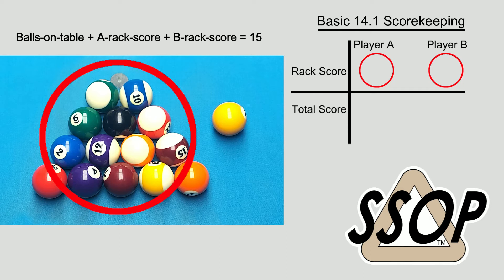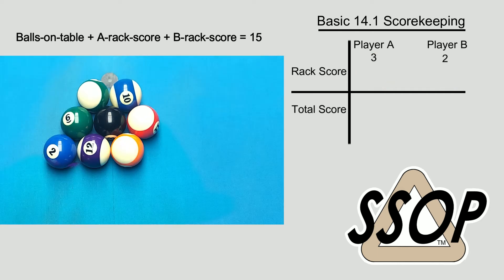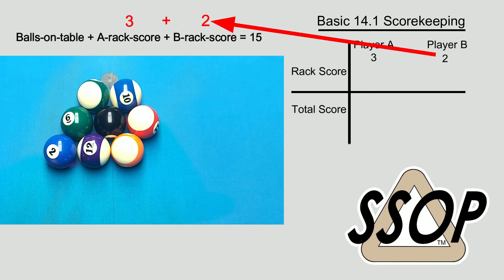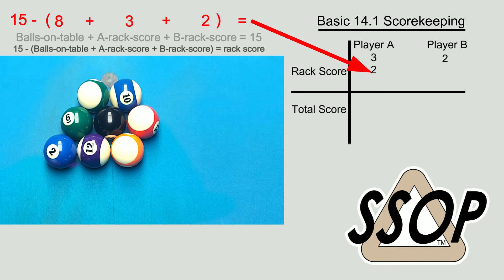The player who is shooting does not need to keep count as they pocket balls. Instead, when your inning is over, you simply add the pocketed balls so far to the balls on the table and subtract from 15. The result will be your score for that inning. So the math looks like this.